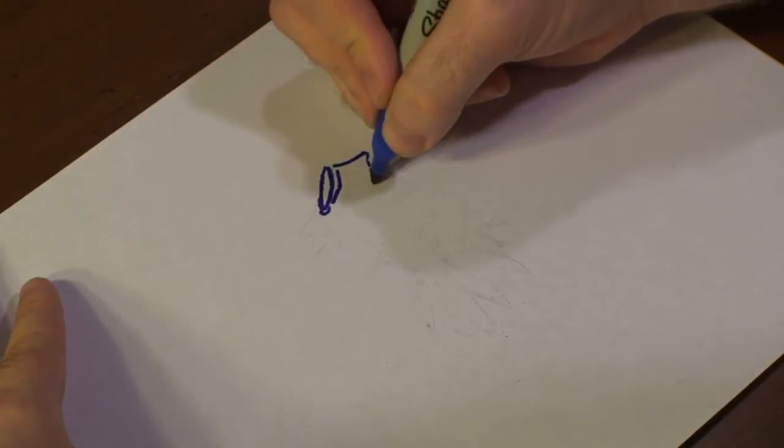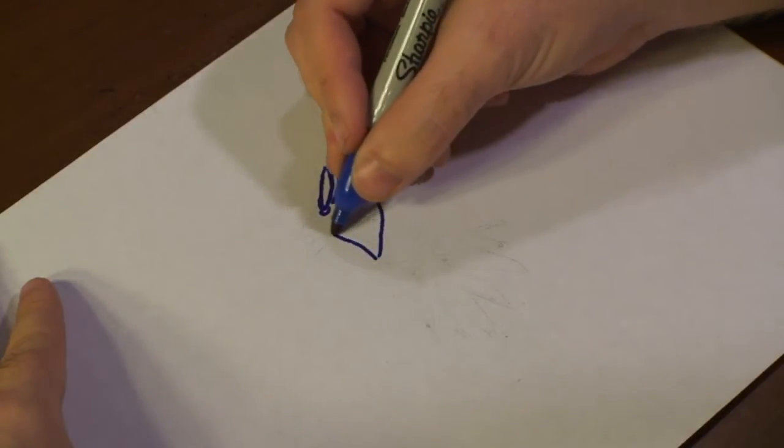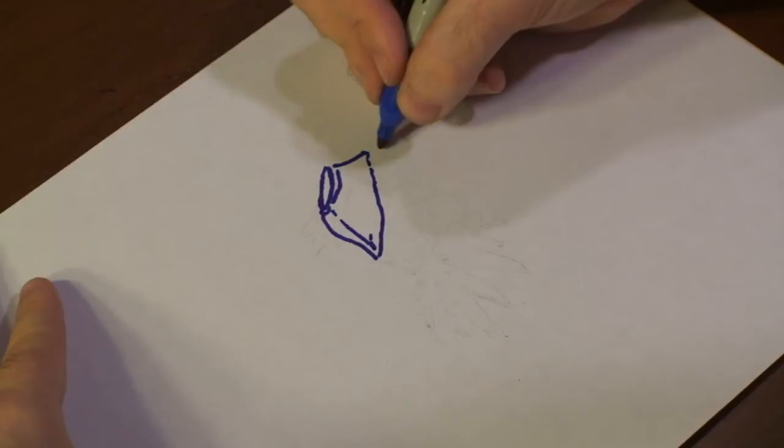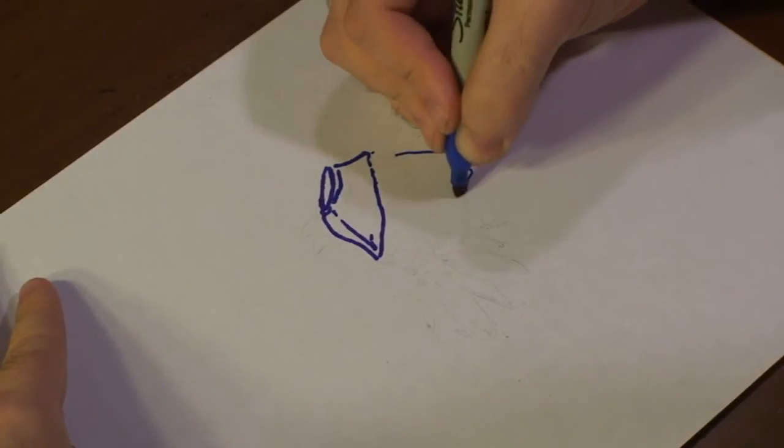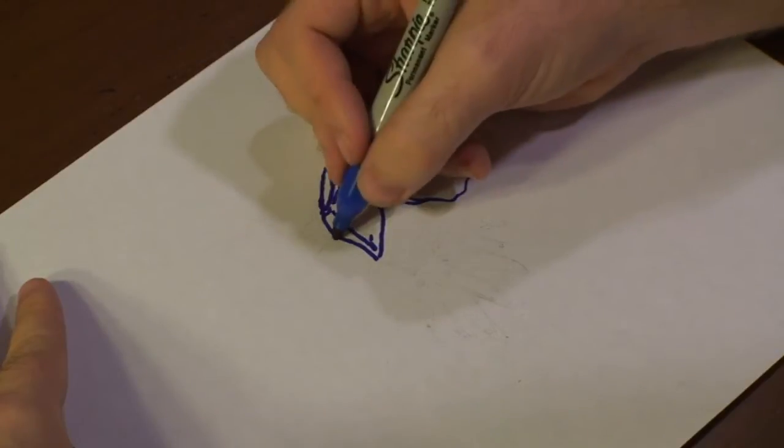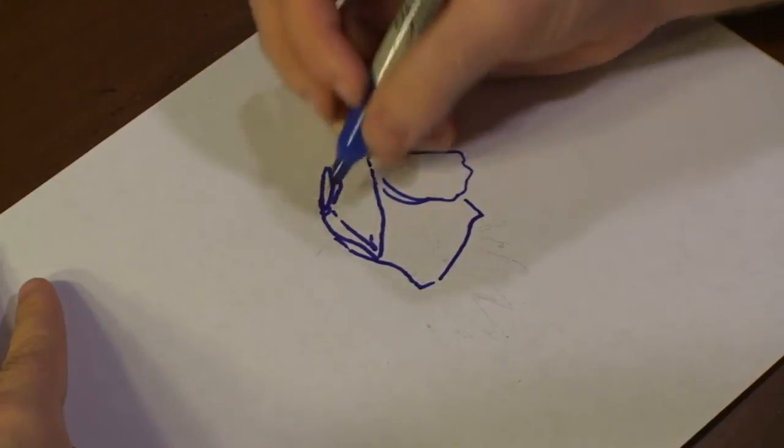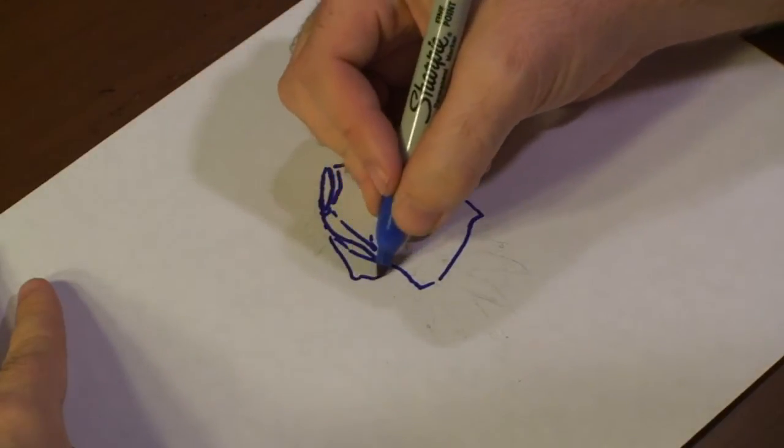Then I'm going to add some solid plate to my shirt. And draw out some sleeves. Add another sleeve right here.